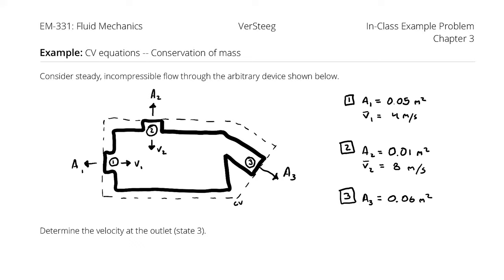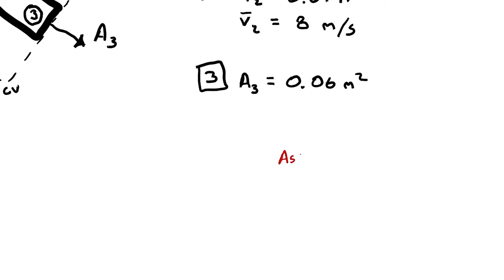Consider steady, incompressible flow through the arbitrary device shown below. Determine the velocity at the outlet, which is state 3. I have cross-sectional areas at all three state points, and I was told average velocities at states 1 and 2 — I know those are average velocities because they have the horizontal bar above the V. It's assumed I'm looking for an average velocity at state 3, so I'll list that as an assumption: problem is looking for average velocity at state 3, written as V̄₃.